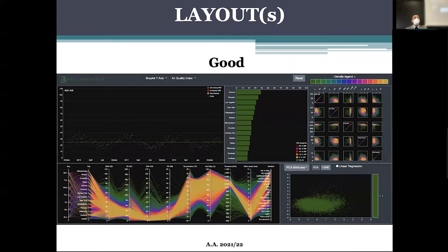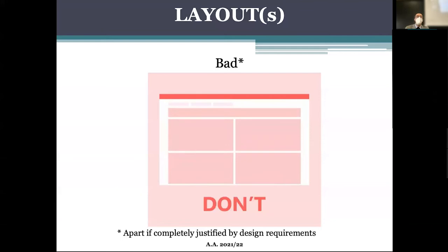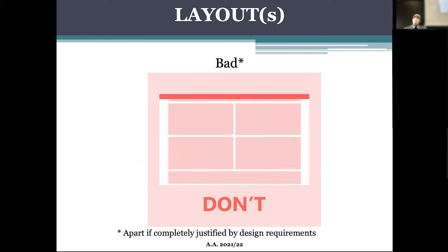Here is an example of a project from last year considered a very good example. This project analyzes air pollution data. The full environment is complex — we can recognize at least five different visual paradigms, at least one of which is complex and composed of different sub-elements, plus a horizontal area for general commands, legends, and similar. This is an example of what a visual analytics system layout should look like.